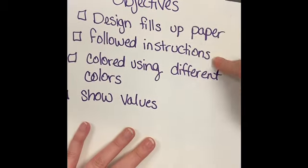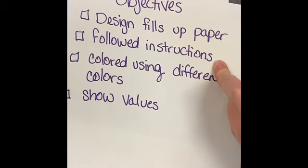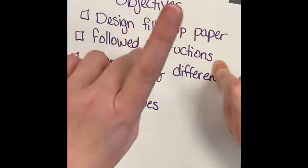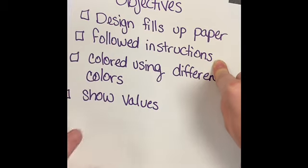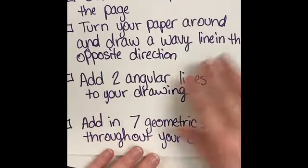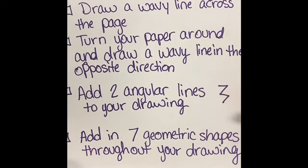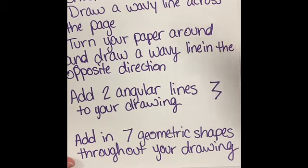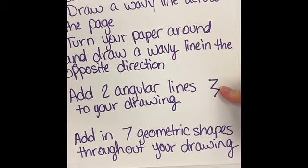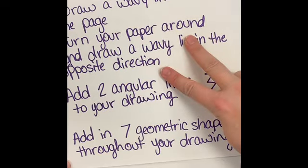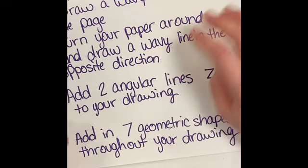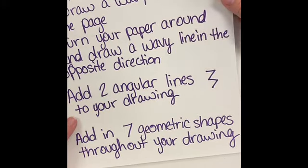Here are the objectives: you drew one wavy line across the page, you turned your paper and drew a wavy line going in the opposite direction, you drew two angular shapes on your paper, and you drew up to seven geometric shapes. There are only four instructions total. Do those seven geometric shapes have to be the same shape? No. Do they all have to be different? No. You can choose up to two shapes for repetition, but do not do all seven circles — I want to see you mix it up. You can do five circles and two squares — that's up to you.